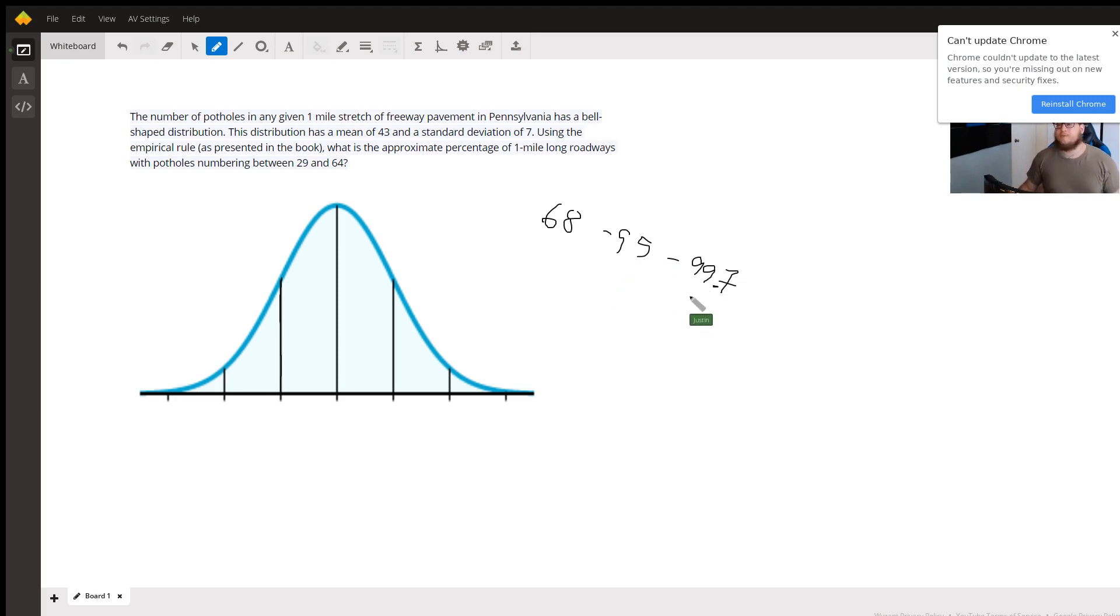And if we go three standard deviations above and below the mean, we will contain 99.7% of all roads, or in this case, all one mile stretches of roads.